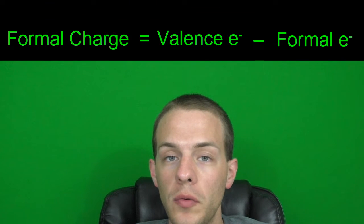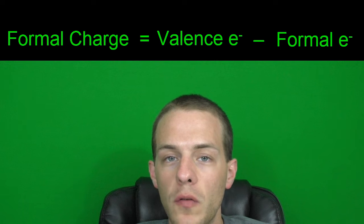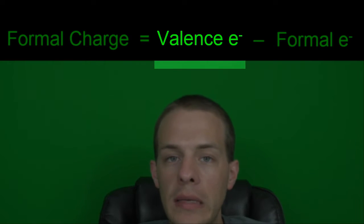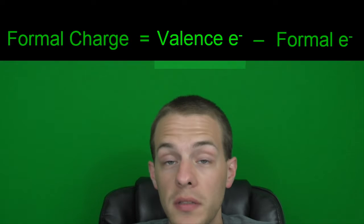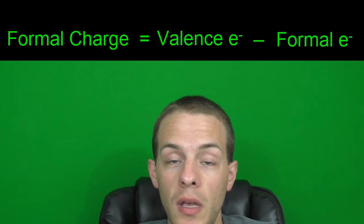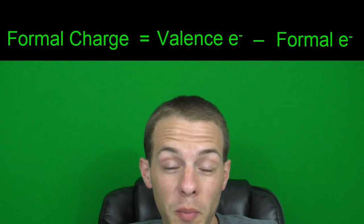Formal charge assumes that both electrons composing that single covalent bond are split down the middle — hydrogen gets one and chlorine gets one. To calculate the formal charge for any given atom within any Lewis dot structure — and this also applies to polyatomic ions — the following formula comes in handy: formal charge equals valence electrons minus formal electrons. Valence electrons are easy — just look up the element in the periodic table and find its group.